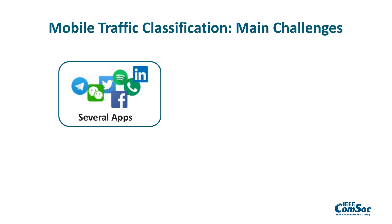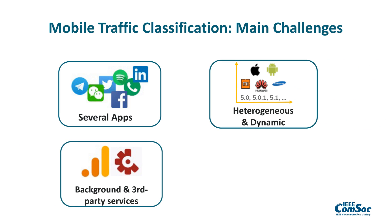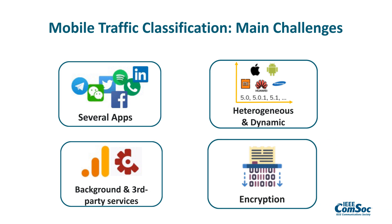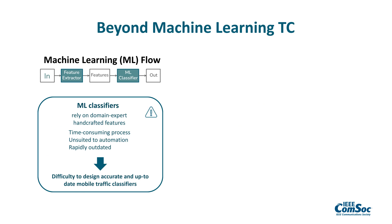Also, mobile traffic classification exacerbates the challenges of traditional traffic classification. These are specifically related to the high number of apps, to heterogeneity and dynamicity in terms of devices, operating systems and versions of the same app, to the presence of background and third-party services in common among different apps, and most importantly by the fact that the majority of mobile traffic is encrypted. This latter aspect has paved the way to the adoption of machine learning based classifiers, which are able to deal with encrypted traffic but are limited to the usage of domain expert and crafted features.